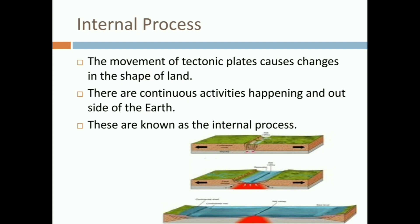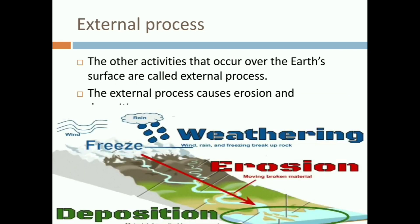The movement of the tectonic plates causes changes in the shape of land. There are continuous activities happening inside and outside the earth. These are known as the internal process. They cause the raising or sinking of the earth's surface. The result of this internal process are hills, mountains, valleys, etc., formed by these movements.